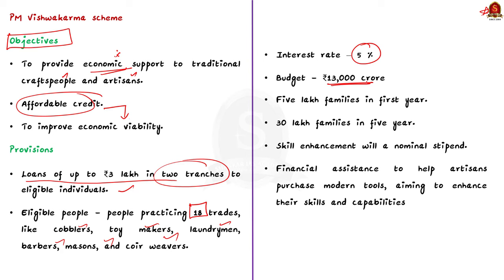The scheme has a budgetary outlay of 13,000 crores. The government aims to cover 5 lakh families in the first year of implementation, and over a span of 5 years the scheme is expected to reach 30 lakh families. The scheme also has a component for skill enhancement — it includes skilling programs that offer a nominal stipend and provides financial assistance to help artisans purchase modern tools.